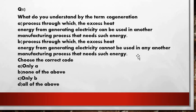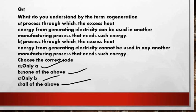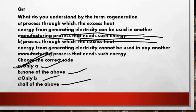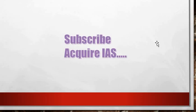The fifth question asks: what do you understand by the term cogeneration? Statement A says it is a process through which excess heat energy from generating electricity can be used in another manufacturing process that needs such energy. Statement B says it cannot be used in any other manufacturing process. The correct answer is only A, as excess heat from electricity generation can indeed be reused in other manufacturing processes.